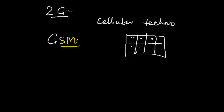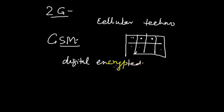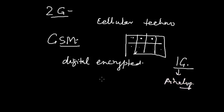The primary benefit of the 2G network over its predecessors was that phone conversations were digitally encrypted. Before 2G there was 1G, which used analog technology. With 2G, communication became digital, and users could also send text messages, MMS, and picture messages.